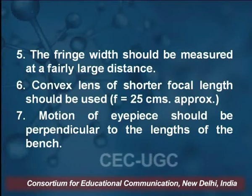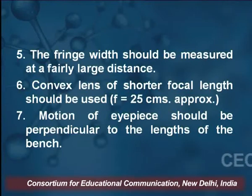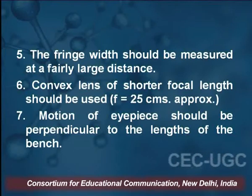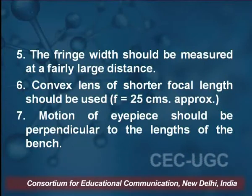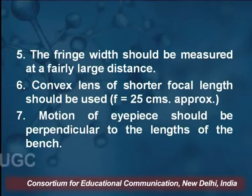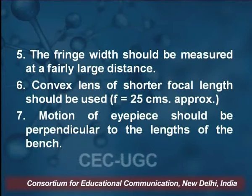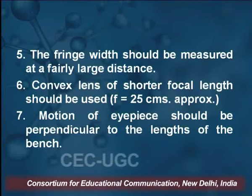The fringe width should be measured over a fairly large distance; taking the difference over 10 fringes is better than over 5. A convex lens of approximately 25 cm focal length should be used to obtain the value of 2D, so that a focused interference pattern is obtained easily. The motion of the eyepiece should be perpendicular to the length of the bench. When light falls on the Fresnel Biprism, it must fall on the ridge line of the biprism so that the two virtual sources are at the same height and same distance.